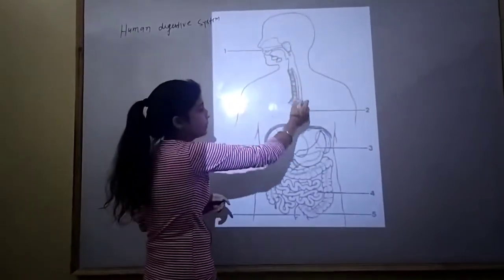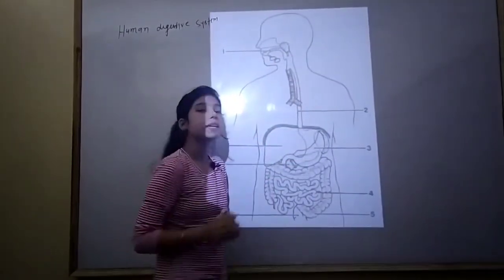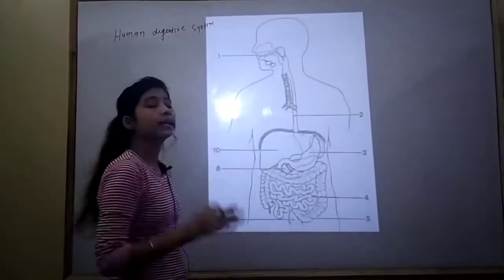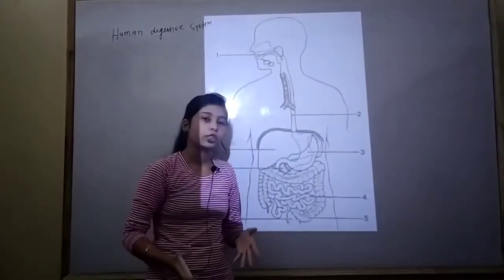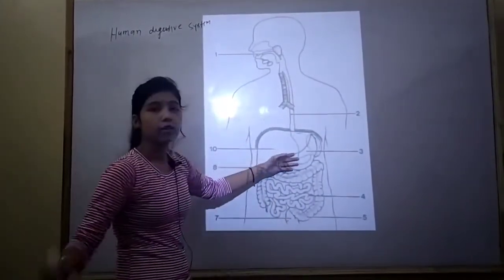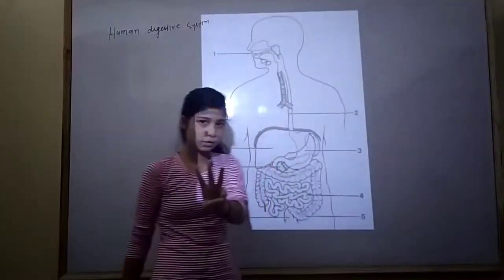Then it goes into the stomach. In our stomach we have a gland which is called gastric gland. We have three types of gastric gland.